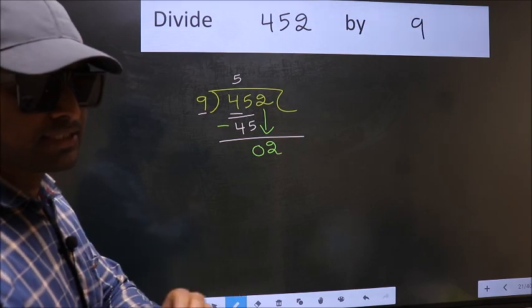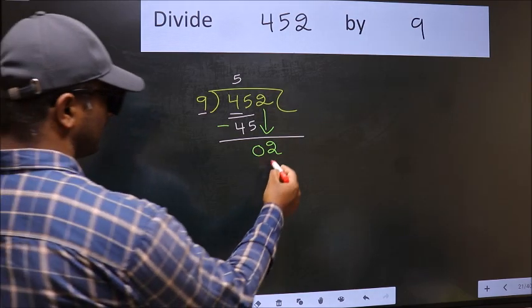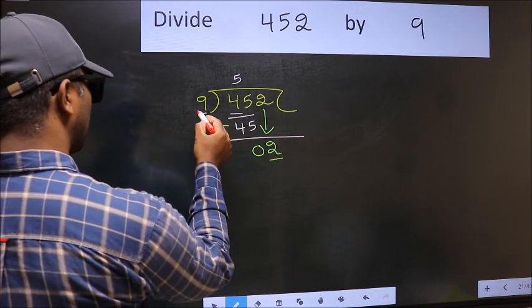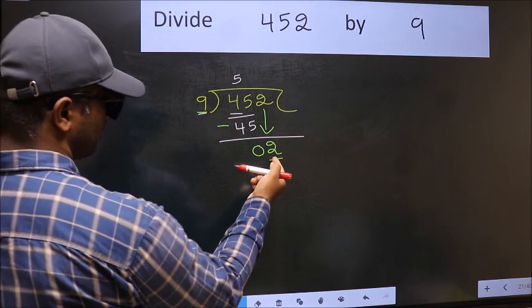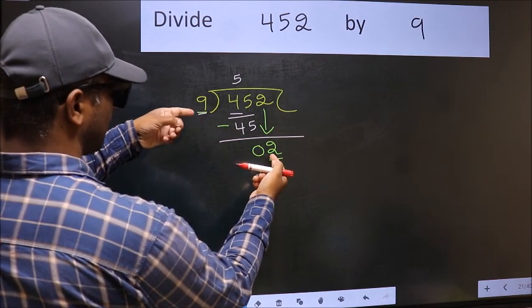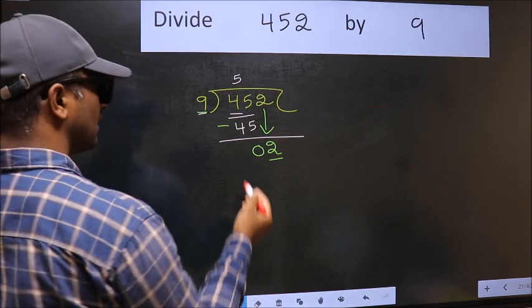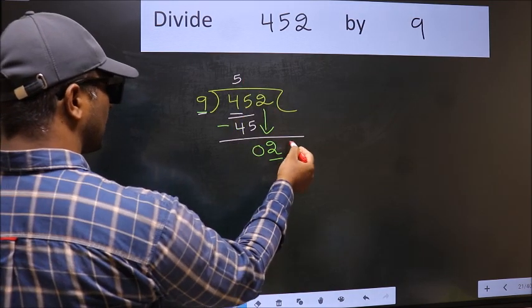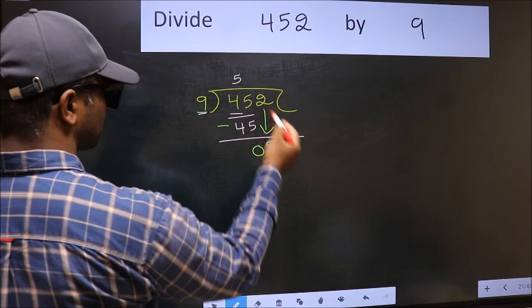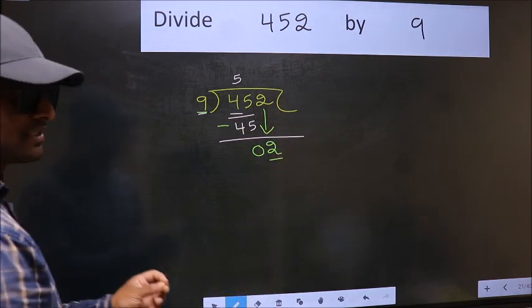And the mistake is this. Here we have 2 and here 9. 2 is smaller than 9. So what many do is, they directly put a dot and take 0, which is wrong.